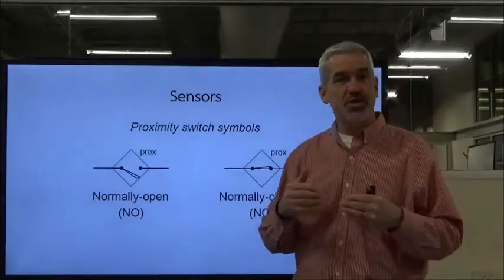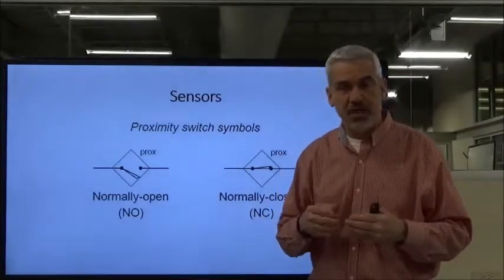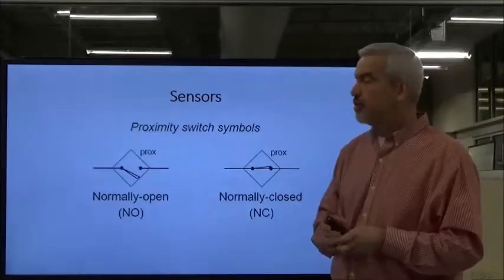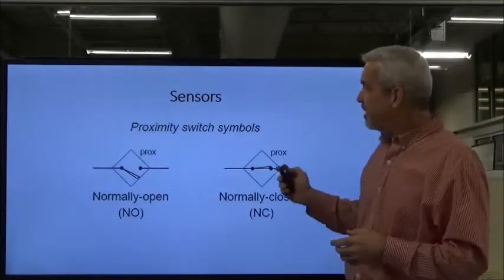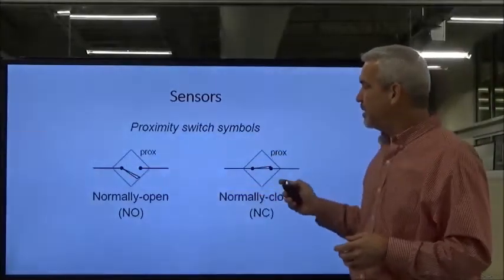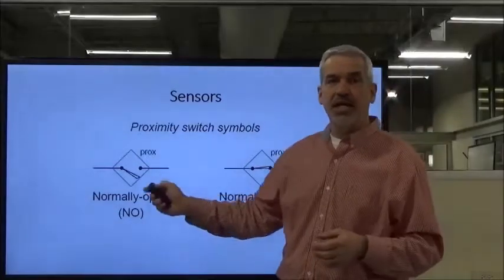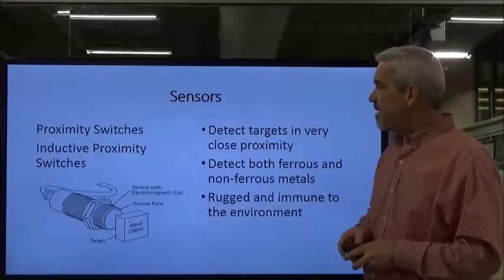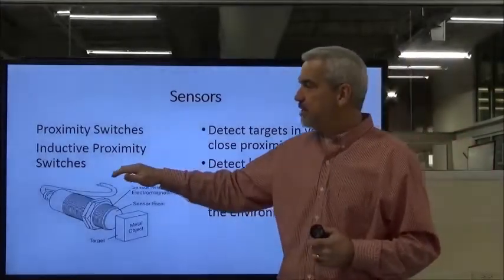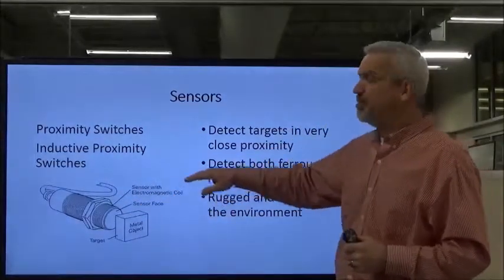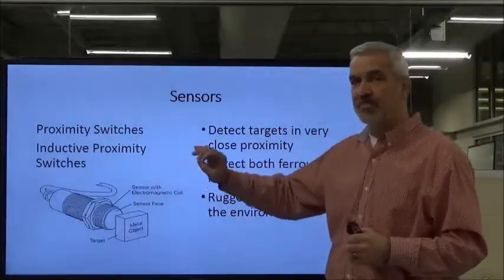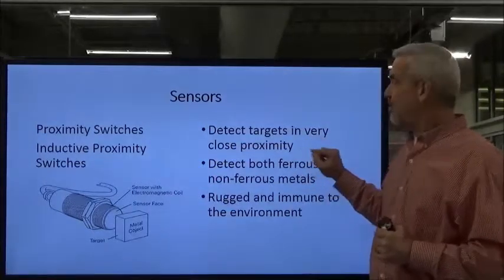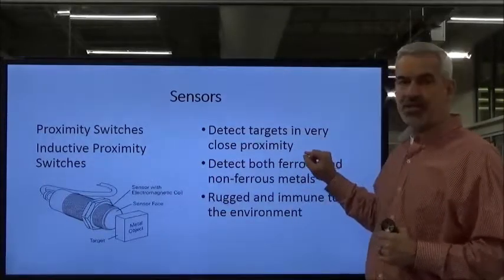With sensors, we're using electronics — not the hard contacts we've talked about before, but electronic circuitry. These are the symbols you will see in your relay logic. Proximity switches, the inductive ones in particular, detect targets at very close proximity.